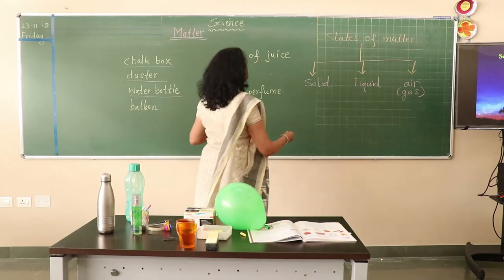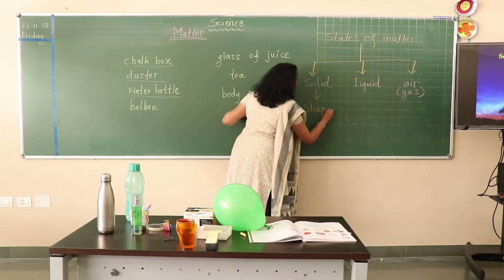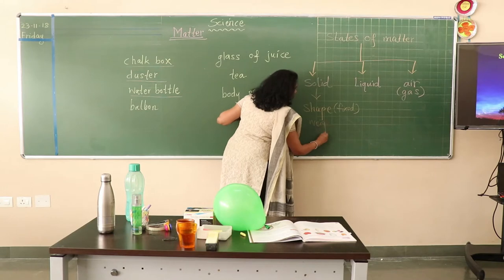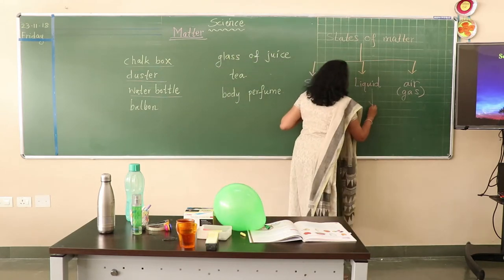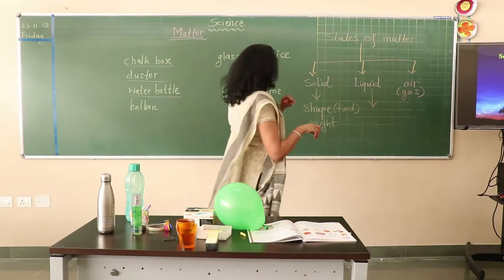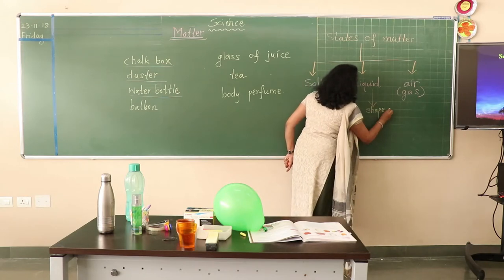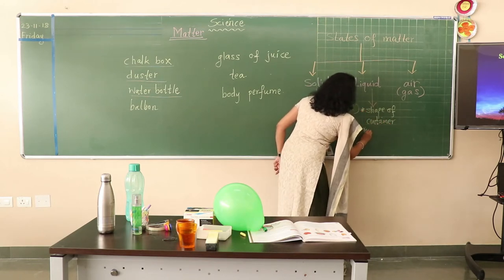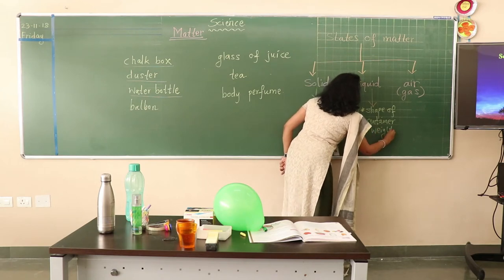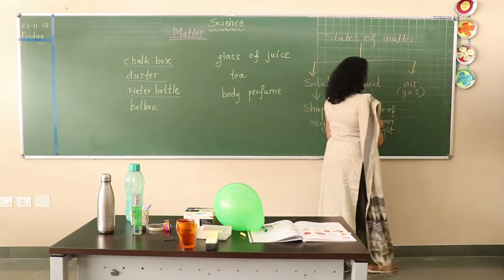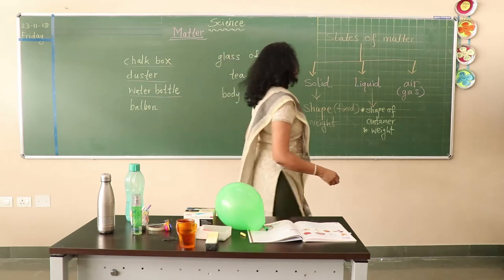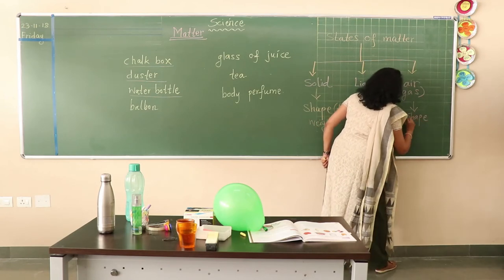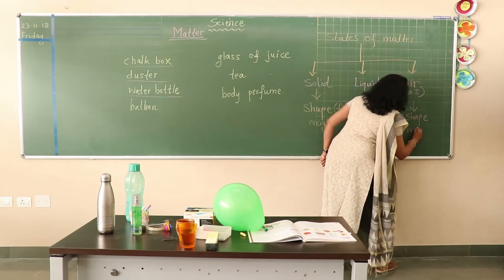Solid has a specific or fixed shape and fixed weight. Liquid doesn't have a fixed shape — it takes the shape of its container — and liquid also has weight. Air or any kind of gas doesn't have shape, but it has weight. Thank you.